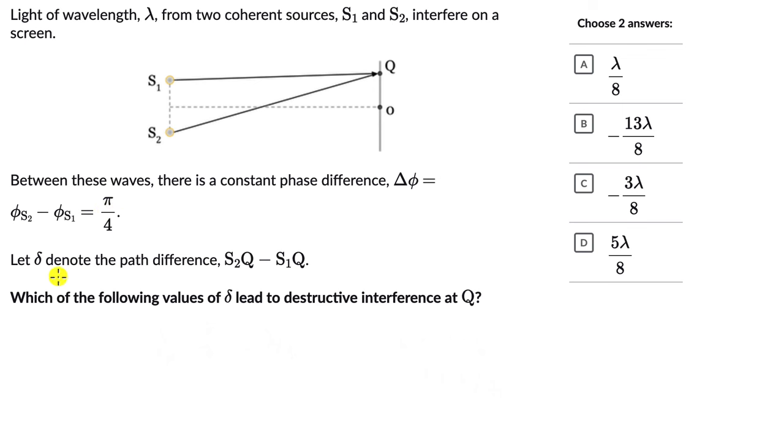Let δ denote the path difference, S2Q minus S1Q. Which of the following values of δ lead to destructive interference at Q?